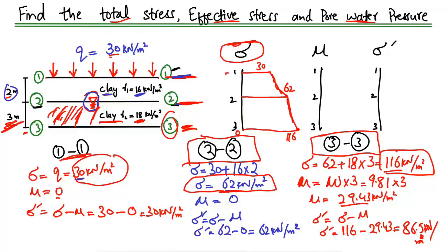For the pore water pressure diagram: at point 1.1 the pore water pressure is 0, and at point 2.2 it is also 0. But at point 3.3 the pore water pressure is 29.43 kilonewton per square meter, so we draw the line connecting from zero at point 2.2 up to 29.43 at point 3.3.